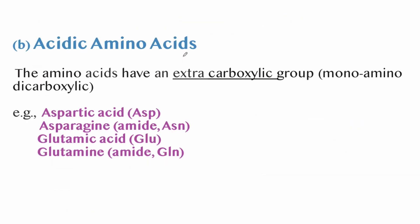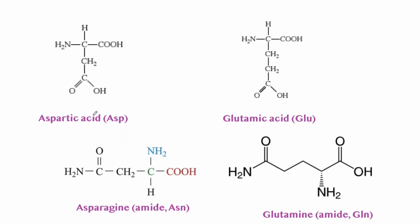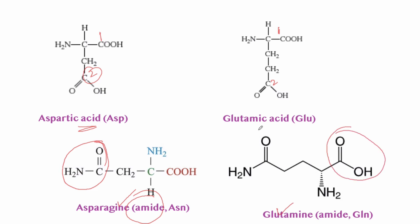The second type is acidic amino acids — they have an extra carboxylic group. Examples are aspartic acid, asparagine, glutamic acid, and glutamine. Aspartic acid has two carboxyl groups; glutamic acid also has two carboxyl groups. Asparagine is an amide derivative of aspartic acid, and glutamine is an amide derivative with one carboxyl group and one amide group.